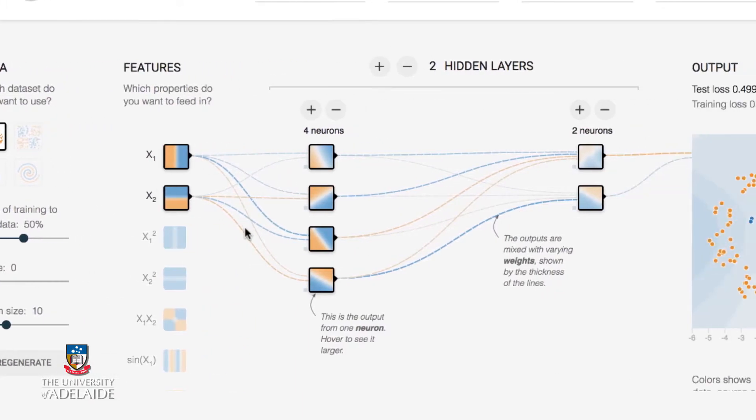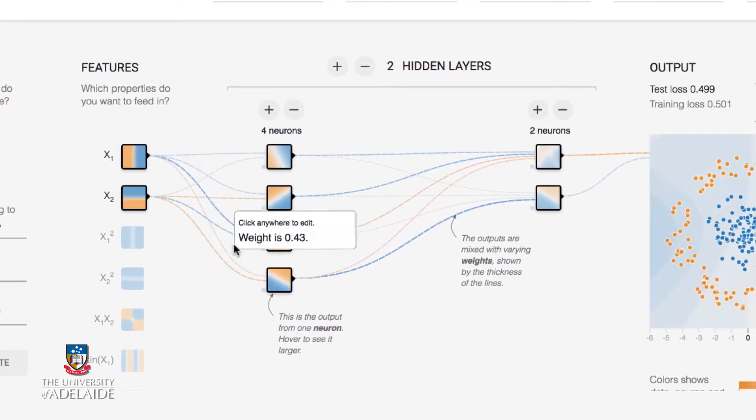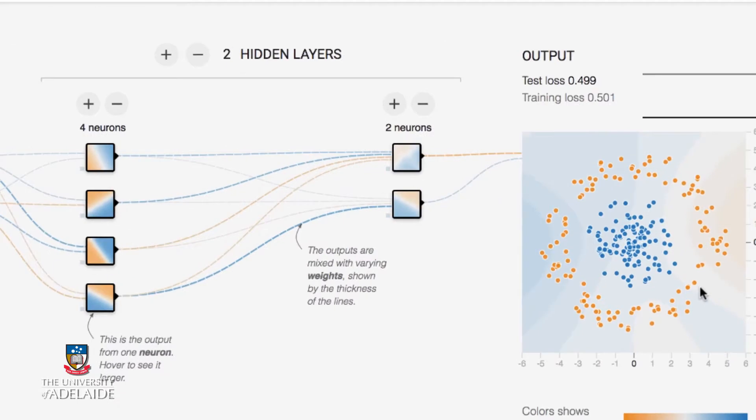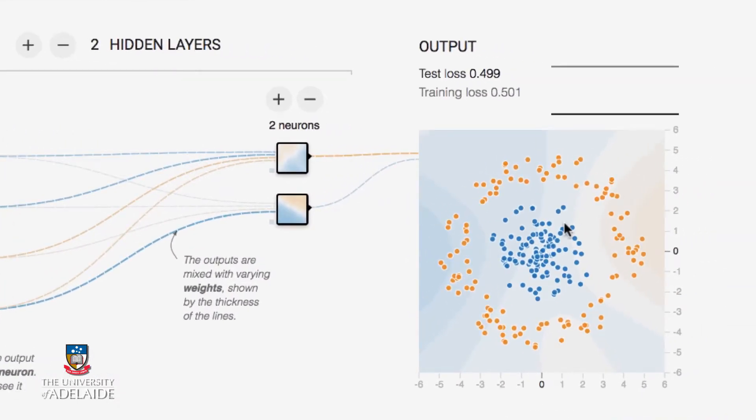Then we've got the network in the middle. And the network is coming up in this default configuration with two input units, four hidden units, and two output units. And it's not that surprising that that's kind of the default structure for the network, because we know that a network with one hidden layer, which this has, is basically capable of doing any classification that you like. On the right-hand side, we have the output of the network.